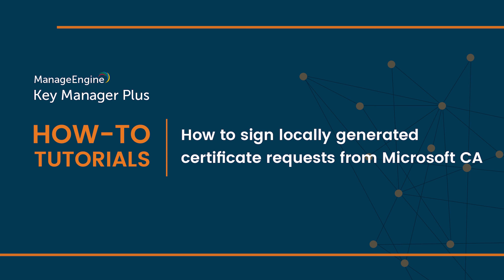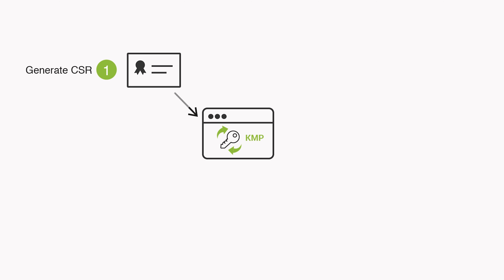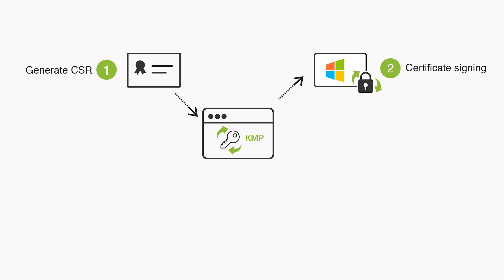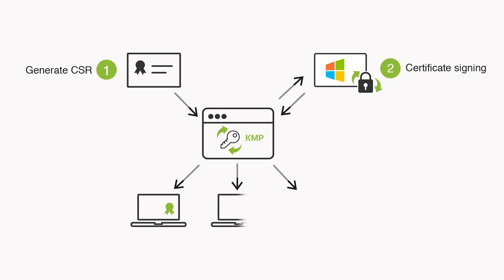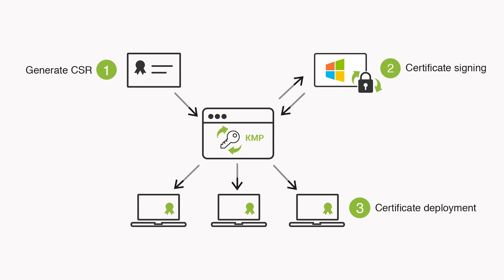Here is a quick summary of the process. First, you need to generate a certificate signing request, also known as a CSR, in KeyManager Plus. Then, you will forward that request to your internal certification authority who will sign the CSR. Once your Microsoft Certificate Authority signs a CSR and issues an SSL certificate, that certificate will automatically be added to the KeyManager Plus certificate repository.